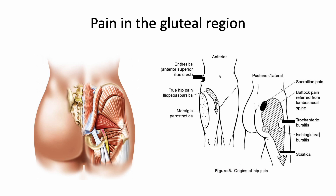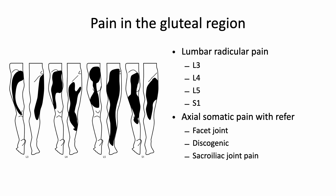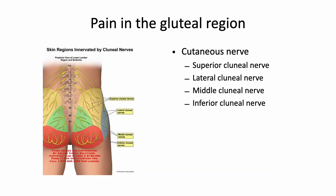The next area is the gluteal region. The gluteal region is one of the most complicated pain areas in the body. Lumbar radicular pain from L3 to S1, axial somatic pain of the facet, disc, and sacroiliac joint all refer to the gluteal region. In minor cases, the cutaneous nerves also contribute to gluteal pain. I'll talk about the inferior cluneal nerve later.